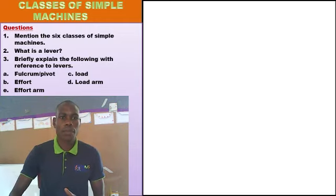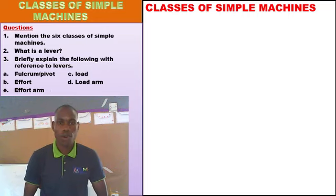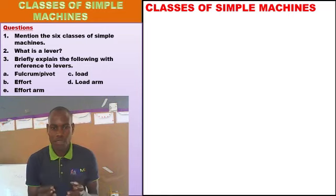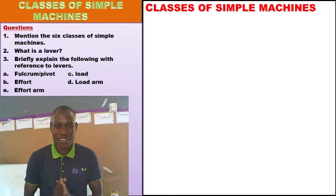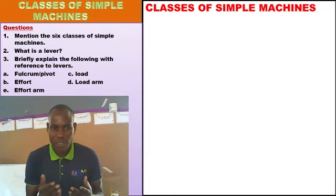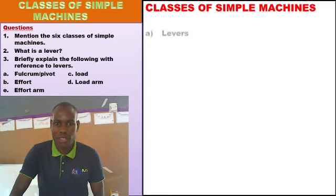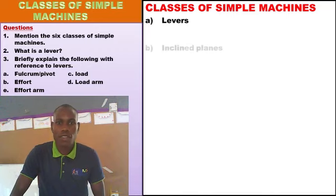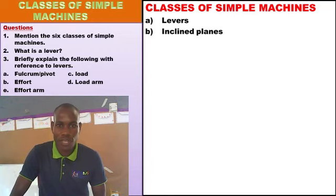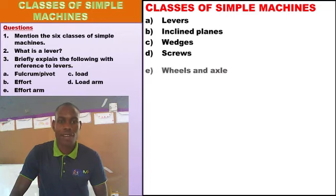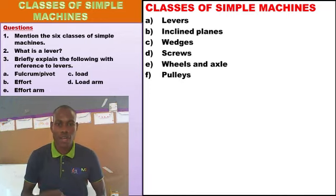Today, we would like to look at our new lesson: the classes of simple machines. Remember, we grouped machines into simple machines and complex or complicated machines. We are going to look at the classes of simple machines. We have levers, inclined planes, wedges, screws, wheels and axle, and lastly we have pulleys. So those are the six classes of simple machines.